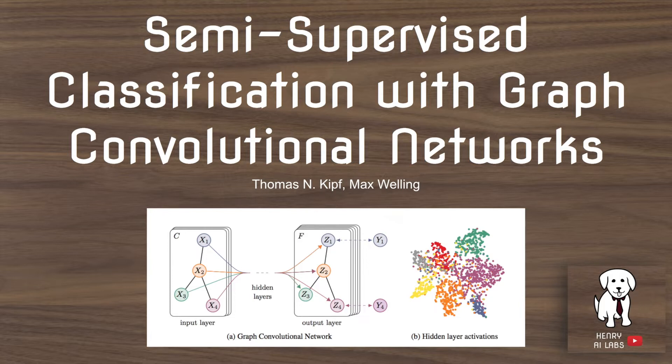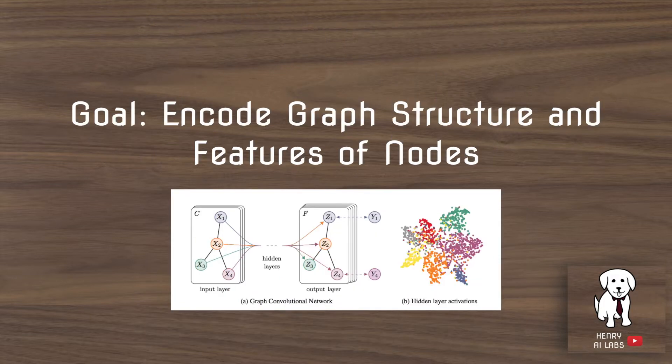And the image labeled B shows a TSNE low-dimensional visualization of these intermediate features with respect to their node labels. So the goal of GCNs is to encode graph structure and the features of nodes into low-dimensional representations and to morph and modify these representations such that they can fit these node labels.